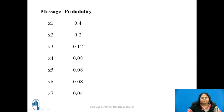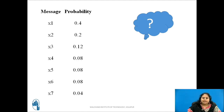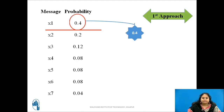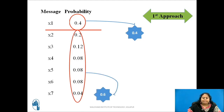Let us now solve this. As per the first step, arranging the messages in the decreasing order of their probabilities, we get x1 at the top and x7 at the bottom as shown. Now pause this video for a few seconds and think where to apply the partition first. There are two possible ways to partition these messages. The first approach is to apply a first partition after x1. This gives the sum of probabilities of the upper message subset as 0.4 and the sum of probabilities of the lower message subset as 0.6.